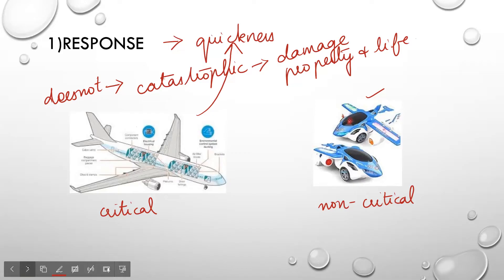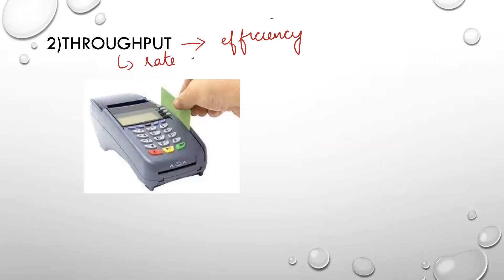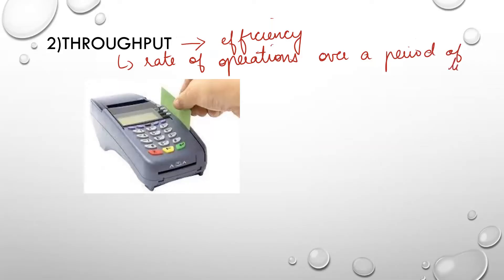The next characteristic in the operational type is throughput. So what is throughput? Throughput is nothing but efficiency. It defines the rate of operations over a period of time.